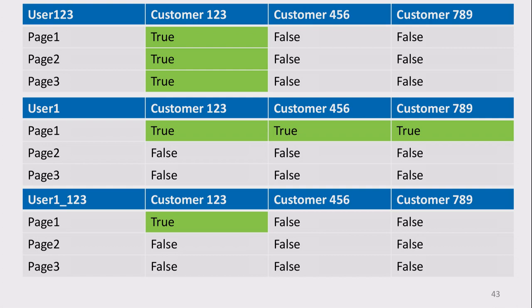A user like user 1, 2, 3 has access to all pages for a single customer. Or user 1 has access to a single page for all customers. Or user 1, 1, 2, 3 has access to a single page for a single customer. Let's look real quick at how that would work.